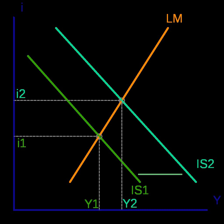Vroey, Michelle De and Hoover, Kevin D., editors, 2004. The IS-LM Model, Its Rise, Fall, and Strange Persistence. Durham, Duke University Press. ISBN 0-8223-6631-2.